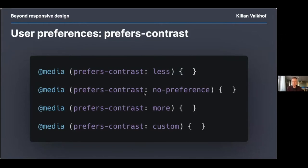More contrast makes intuitive sense — visual impairments can make it difficult to pick up subtle differences in color, so increased contrast literally makes things easier to read. But who wants less contrast? People with light sensitivity issues might prefer a screen with less harsh contrast, since full black or full white can be very taxing. Note that wanting less transparency is not the same as wanting more contrast — they are different media queries solving different issues.